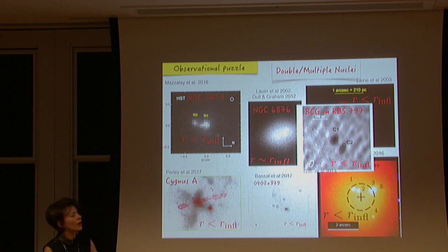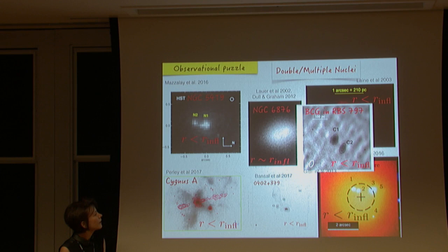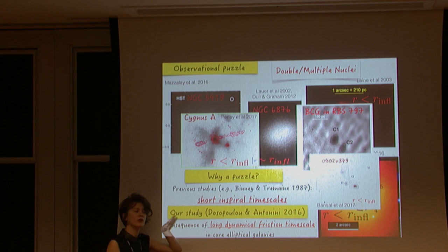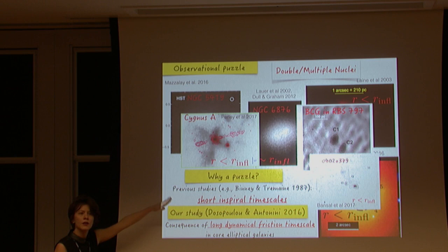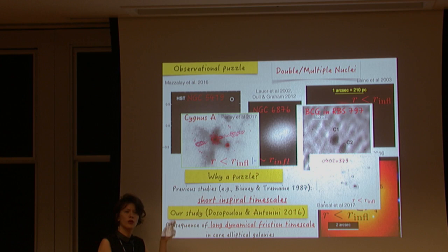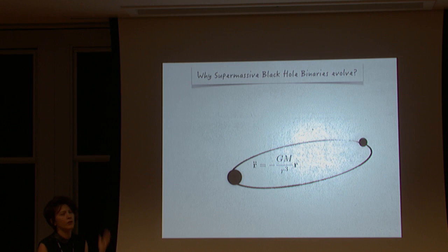After we published this work, more systems were added to the sample with exactly the same characteristics. This is a puzzle because if I calculate the dynamical friction timescale using the classic Binney & Tremaine formula, I get a very short timescale — meaning the two black holes should have merged already. What we show in this study is that the dynamical friction timescale, when calculated correctly, is actually long, so these multiple nuclei could be stalled satellites.